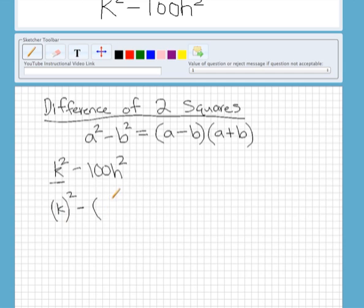Now the second term is not so obvious what's being squared. If you look at 100, what number times itself would give you 100? So yeah, it's 10. So we have 10 and then h squared, so h is also being squared. So if you squared 10h,